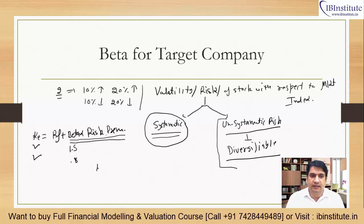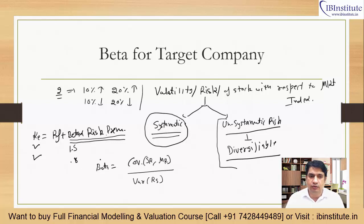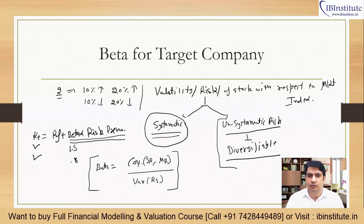Let's talk about beta's calculation. Beta's calculation is the covariance of security return and market return, divided by the variance of market return. This formula is the standard one. If we talk about covariance and variance in detail, that discussion could take 20–25 minutes.